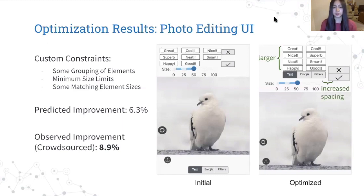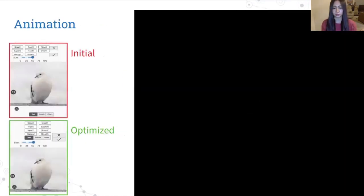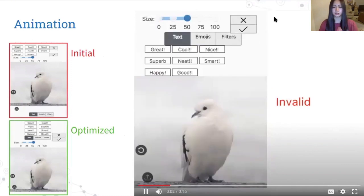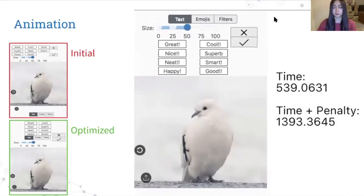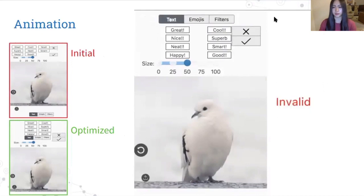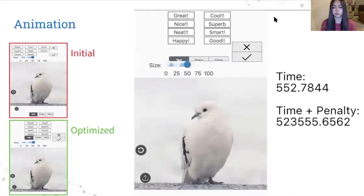So we output the layout after each update step. So one cool thing we can do is animate the optimization process. So when it says invalid, like there are elements overlapping or going out of bounds, and then time is the sum of the task performance values for the entire task sequence, and time plus penalty is the objective function.